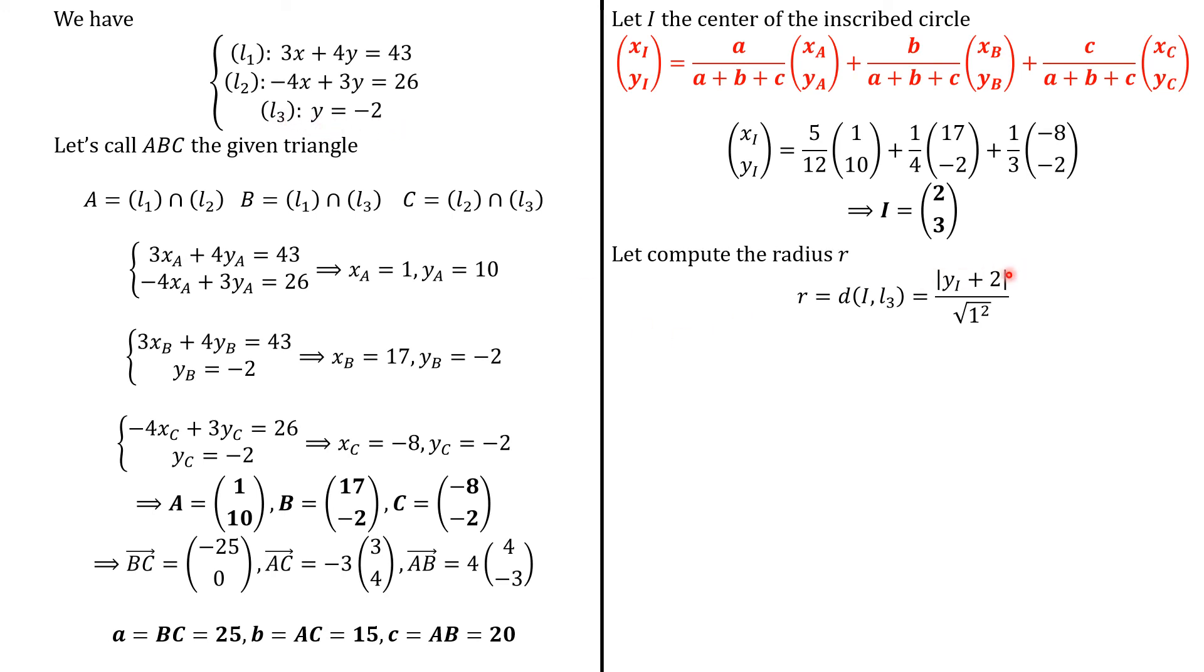Because actually, the equation here is y plus 2 equals 0. That's why we have this absolute value, and we have coefficient 1. So, it is the square root of 1 squared. So, replacing, we have 5 in the numerator and 1 on the denominator. So, r is 5.